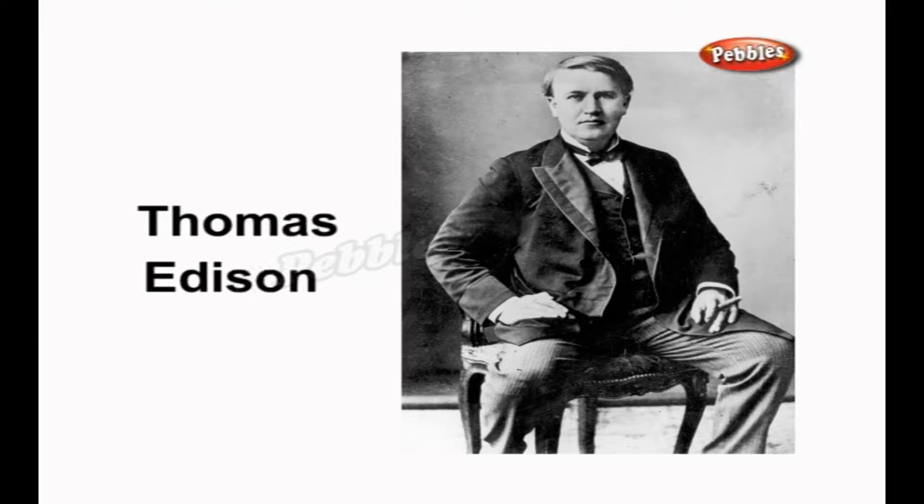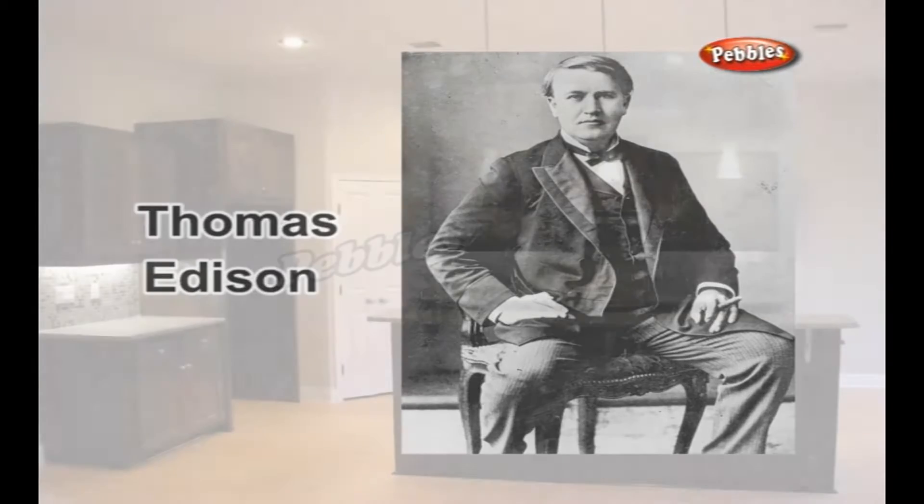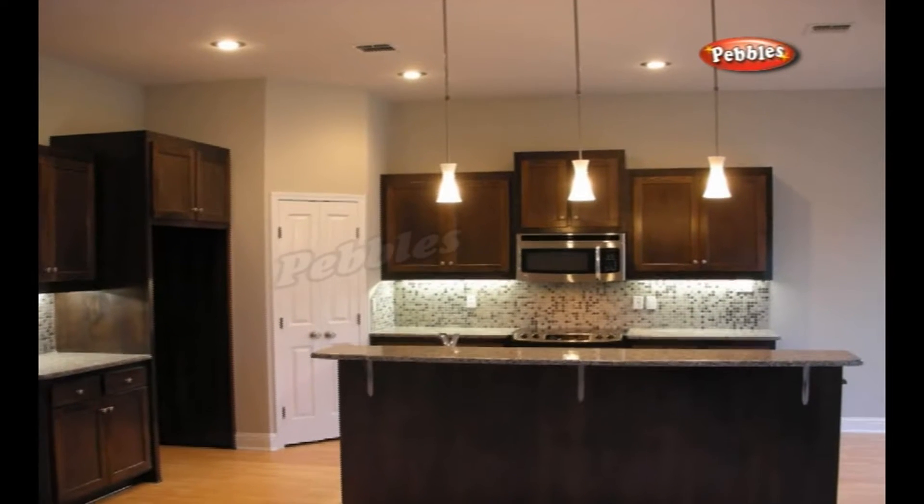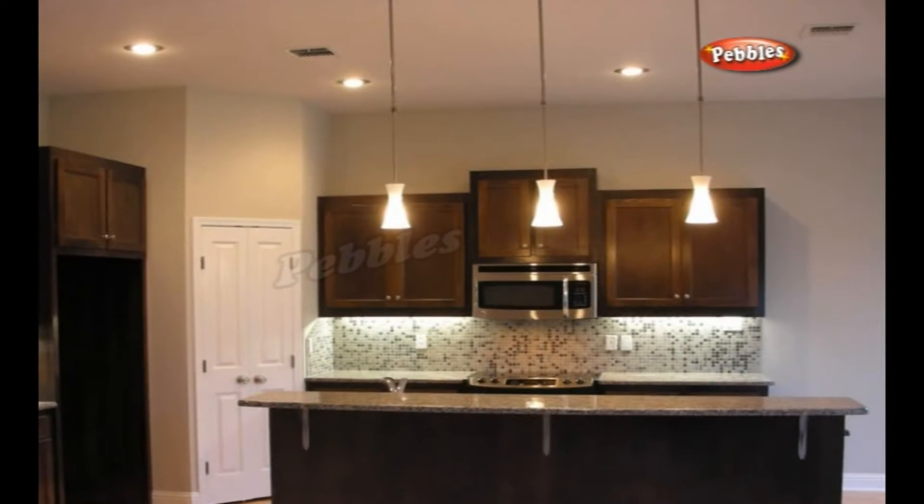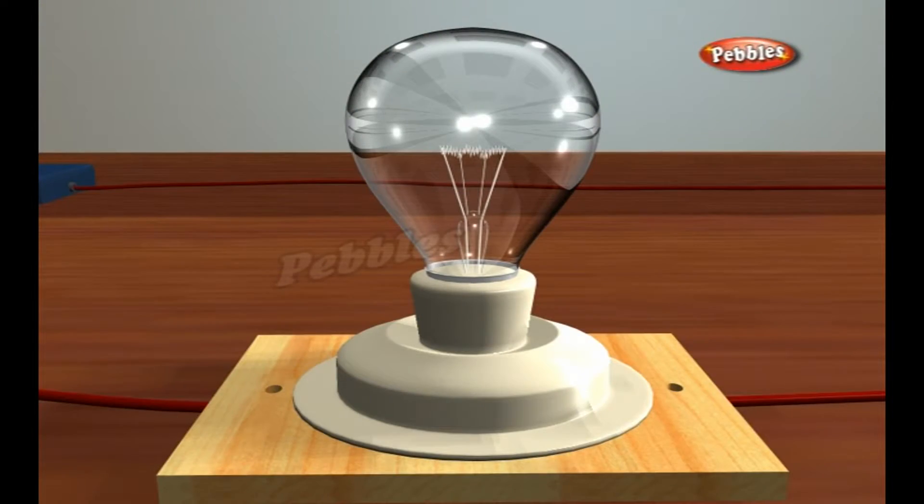Englishman Sir Joseph Swan and American Thomas Edison both got it right around the same time, and within 25 years, millions of people around the world had installed electrical lighting in their homes. Light bulbs have a very simple structure.